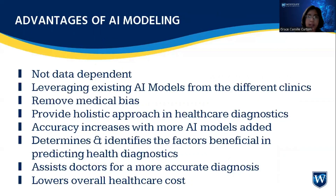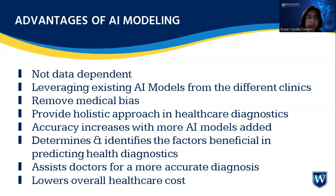So what is the advantage of AI modeling? It is not data dependent. It also leverages existing AI models from different clinics, as each clinic has their own AI model. They remove medical bias because they test all the features. We can provide a more holistic approach in healthcare diagnostics. When AI models from different clinics are shared, the accuracy of healthcare prediction increases. This also helps clinicians identify factors beneficial in predicting health diagnostics, and assists doctors for a more accurate diagnosis, especially when faced with tricky healthcare conditions. Overall, the aim is to lower healthcare costs, especially here in the US.